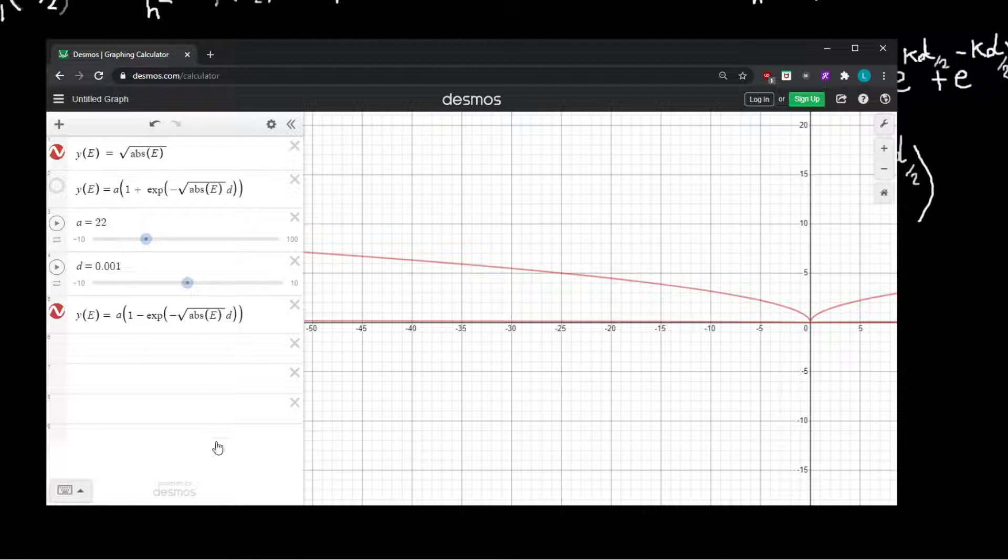And this actually makes a lot of sense, because we know that for a single Dirac delta well, that we have one bound state. And that's what we found last time.